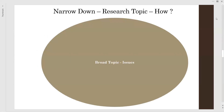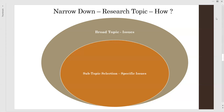The next question is how to narrow down a research topic. When we start with 'how,' the very first thing is to begin with the broader topic. In the broader topic, there are several issues. We list all the issues stage by stage, step by step. Once we write down the broader topics, we then go for subtopic selection.